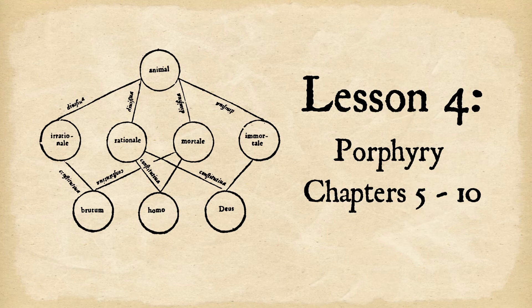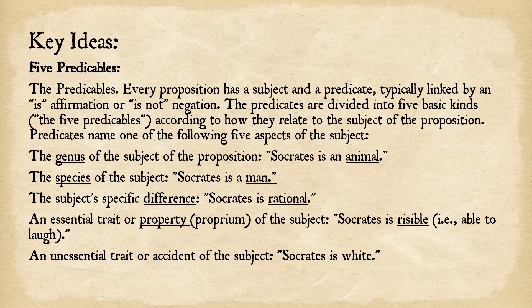Lesson 4 of Porphyry's Isagoge, covering chapters 5 through 10. The key ideas for this lesson — we're talking about the five predicables. We have discussed some of the major ones in detail, but now we're going to discuss the relationship of the predicables all to one another.